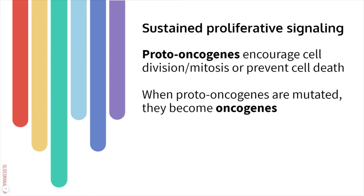I want to introduce two gene categories related to this hallmark: proto-oncogenes and oncogenes. Proto-oncogenes are normal genes that everyone has — healthy genes that encourage cell division, or mitosis, when it's appropriate. For example, in a three-year-old who is actively growing, proto-oncogenes encourage those cells to divide, or they would encourage cell division if you got a cut and needed that wound to heal.